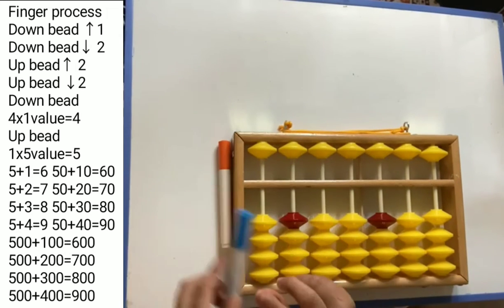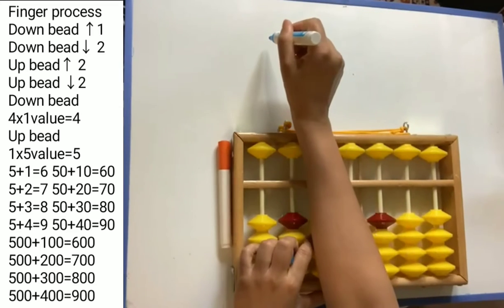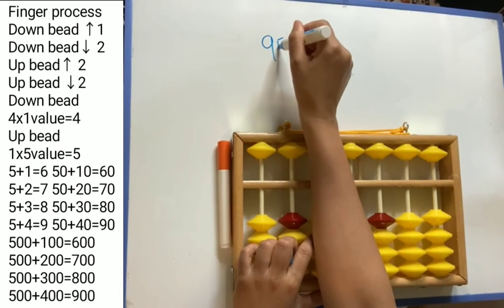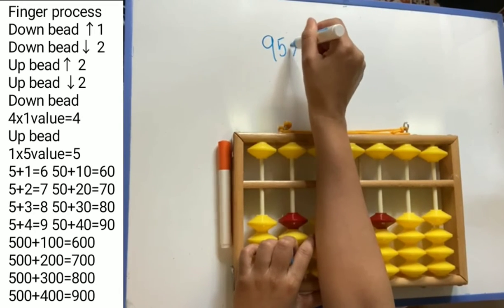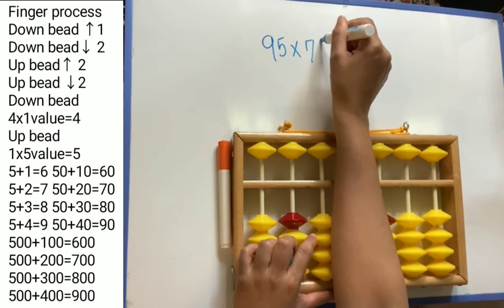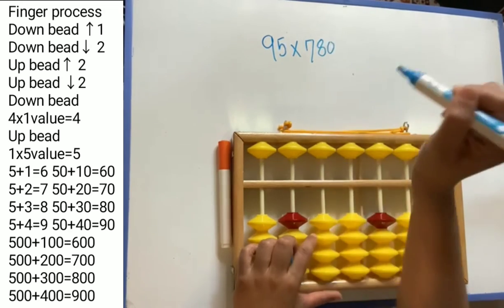Today's question is 95 multiplied by 780.